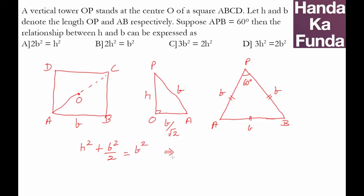Or it gives me B square is equal to 2H square. Is that given to me in one of the options? 2B square is equal to H square? No. 2H square is equal to B square? Yes, it is given to me as option B and that will be my answer.